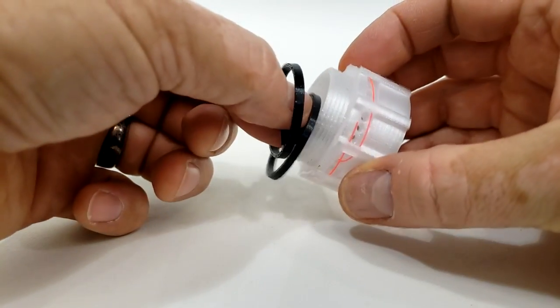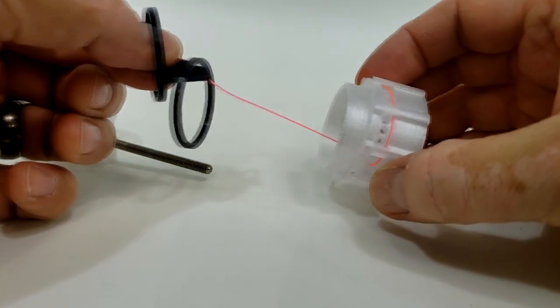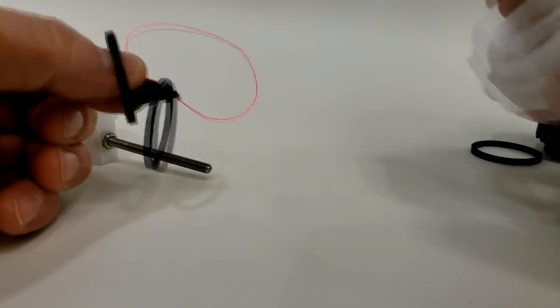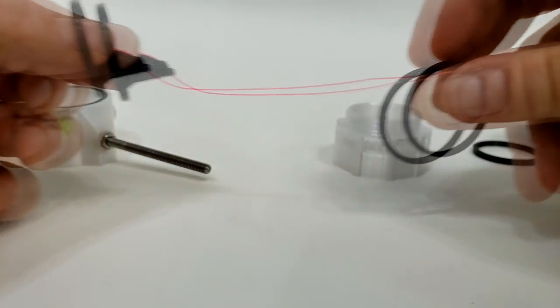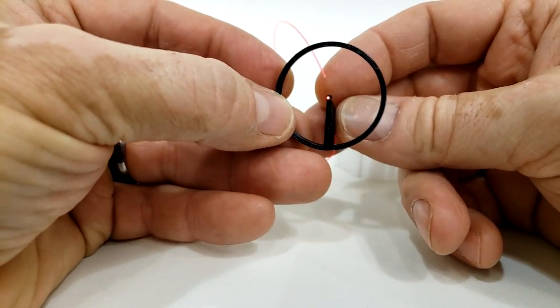Then you can simply pull your fiber. It'll come right out of your retainer. Take off your o-ring and you can change to a new color.